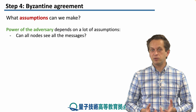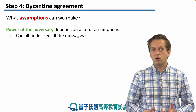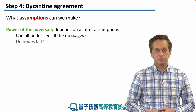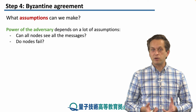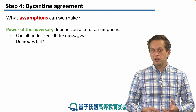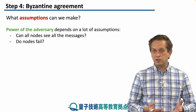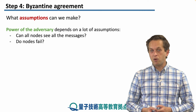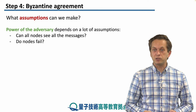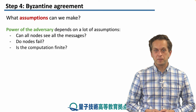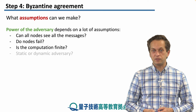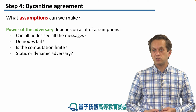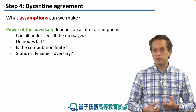One such question we must answer is: can all nodes see all the messages? Do the nodes fail themselves or not? For example, a failure might simply give us conflicting information, or the node can be taken over by a malicious party. Is the computation finite or infinite? Is the adversary static, or can it change its strategy on the fly and be a dynamic adversary?